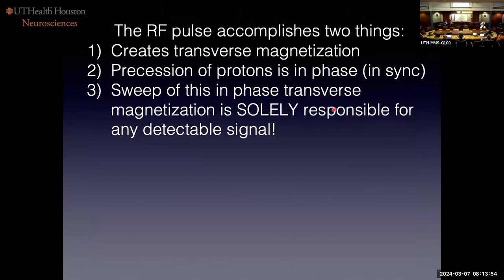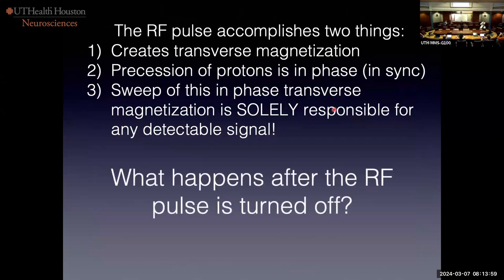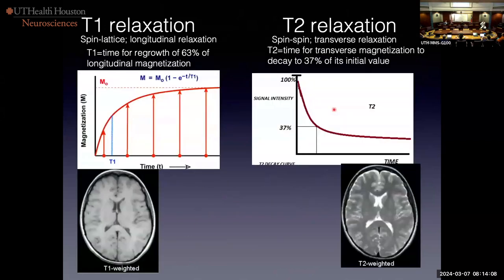The RF pulse goes in for about five milliseconds — very brief. Once we turn it off, it's a high energy state, so it's not going to continue. The spins are going to want to go back into equilibrium. The way they go back into equilibrium is described by two time constants: T1 and T2.